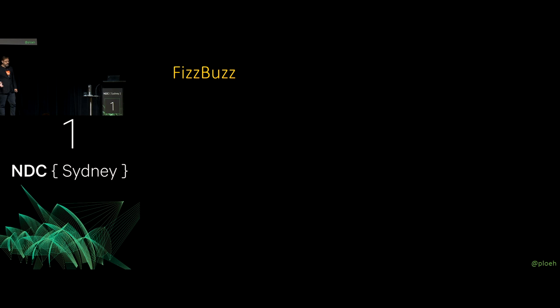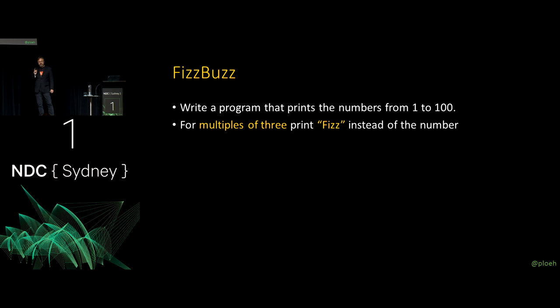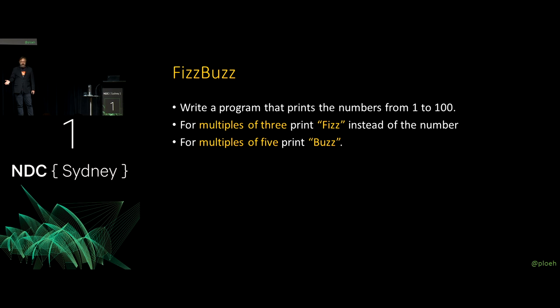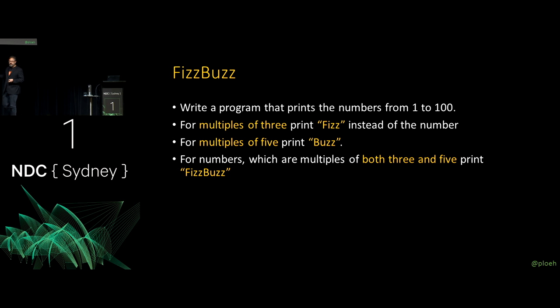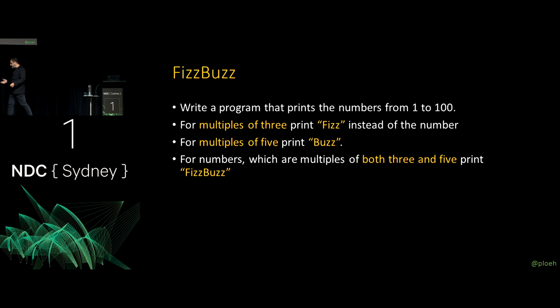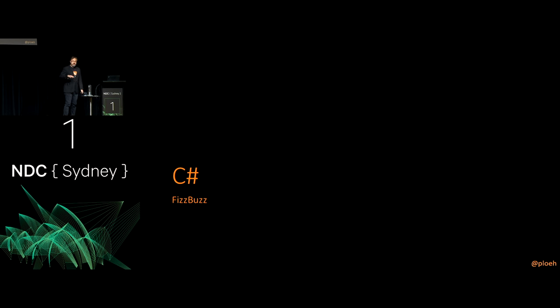The rules of FizzBuzz are very simple: write a program that prints the numbers from 1 to 100, but with special rules. If the number is a multiple of 3, print 'Fizz' instead of the number. If it's a multiple of 5, print 'Buzz.' If it's a multiple of both 3 and 5, print 'FizzBuzz.' That's it — 20 seconds to explain the rules. It's trivial; if you try this in your most familiar language you should be able to do it in about five minutes.